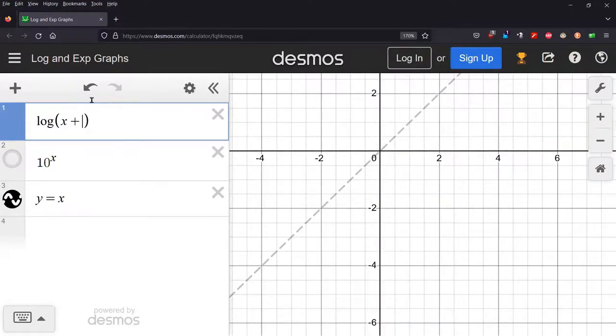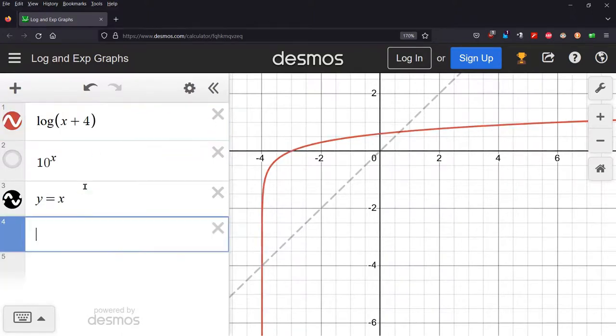And for our problem, it was plus 4, log of x plus 4. And that puts the vertical asymptote, it shifted it left 4, so the vertical asymptote is x equals negative 4.